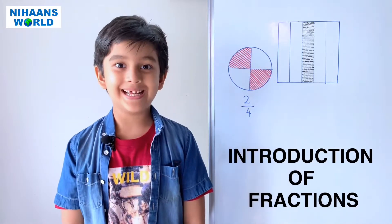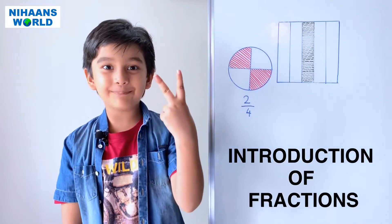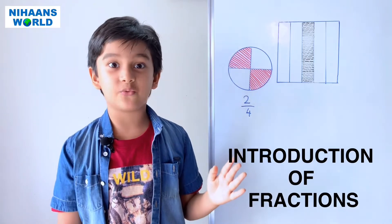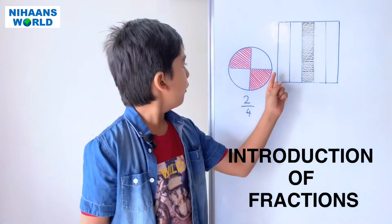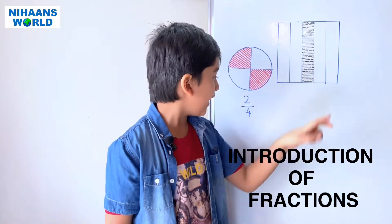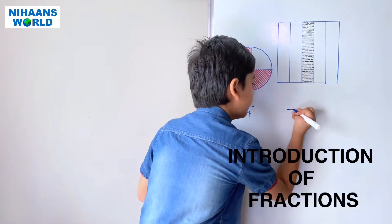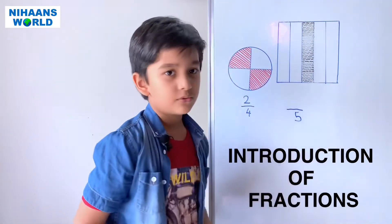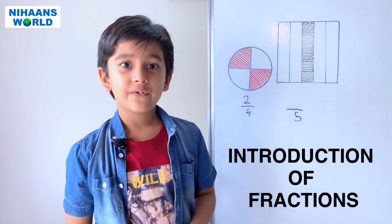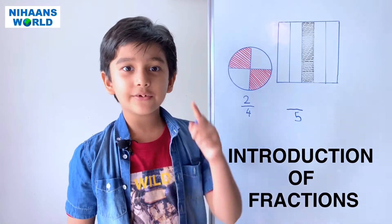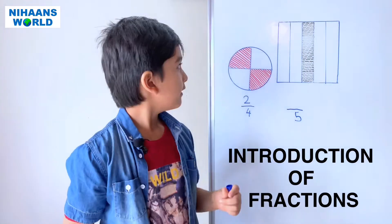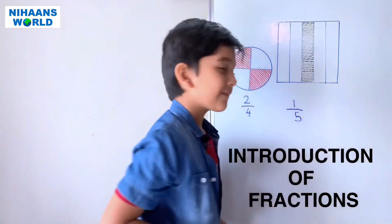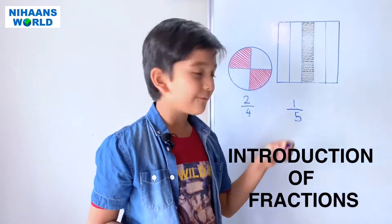Friends, let's do the second example. So how many parts is the square divided into? One, two, three, four, five. So the denominator is five. So what will be the numerator? Friends, can you tell me? One. So the answer is one by five.